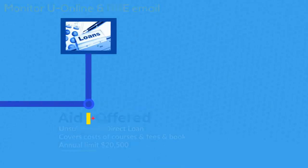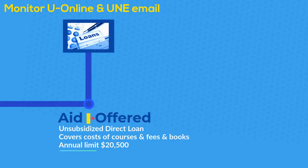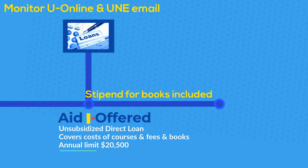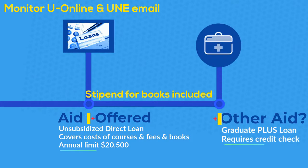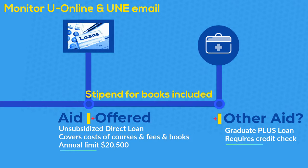You'll be awarded the unsubsidized loan to cover the cost of your courses, which will include a stipend for each semester's supplies to reimburse you. If your costs exceed the annual loan limit, you may be awarded the Graduate PLUS loan. However, this loan requires a credit check. If you're denied, we will notify you.